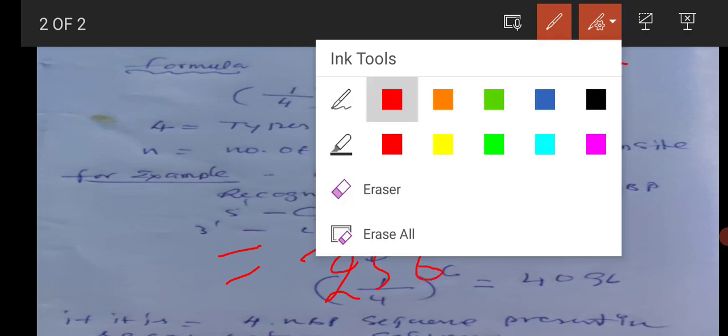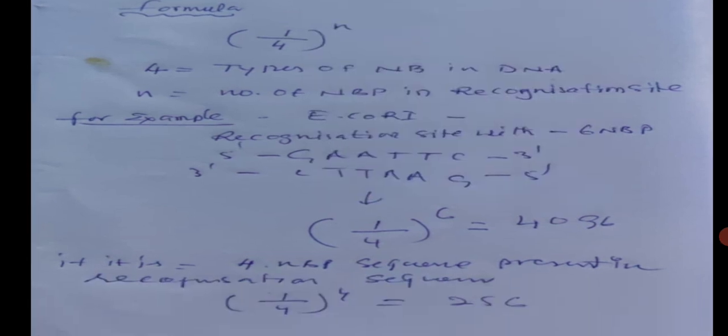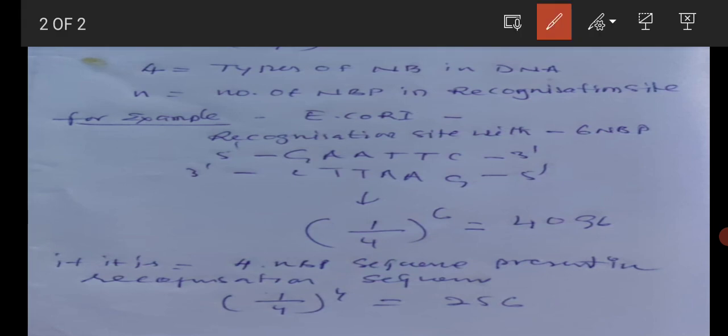We have taken another example, you can see. Look at another example: if EcoR1 enzyme - its recognition sequence includes six recognition sequences, six nucleotide base pairs. Six nucleotide base pair recognition site is the six base pair.